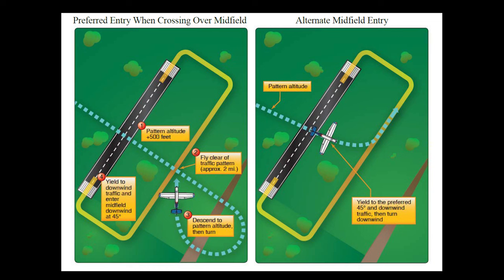Let's look at how Arnie should have entered the left pattern for runway 22. Once the runway in use and proper traffic pattern direction have been determined, the pilot should proceed to a point well clear of the pattern before descending and entering the pattern at pattern altitude. A pilot should never descend to pattern altitude in the traffic pattern — this allows sufficient time to view the entire traffic pattern before entering. The FAA recommends the preferred entry of crossing over the midfield and joining the downwind at a 45-degree angle. The alternate midfield entry is permitted only when the pattern is not congested.